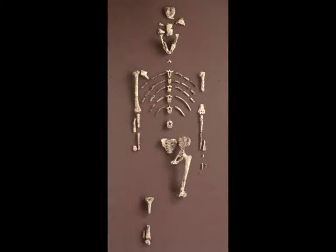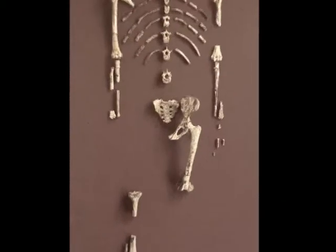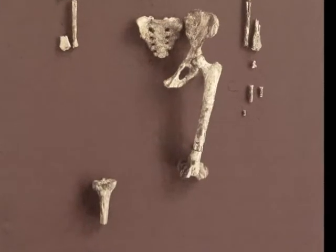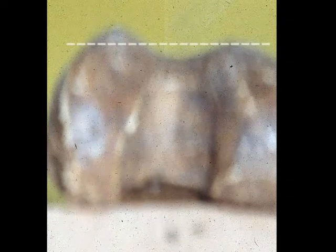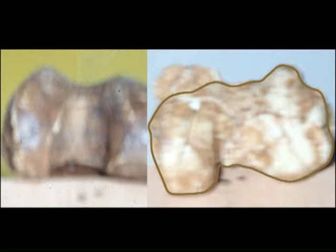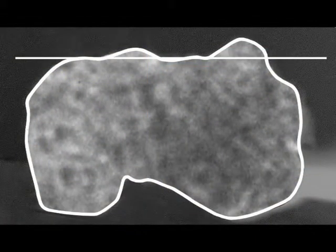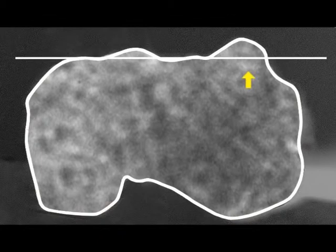Dans le cadre de cette étude morphologique, il a été réalisé une tomodensitométrie de l'extrémité du fémur gauche de Lucy et d'un fémur d'australopithèque robuste, dans des conditions identiques à celles utilisées chez les sportifs modernes. Les deux os ont été placés sur un support suivant un axe d'environ 15 degrés par rapport au plan horizontal. Les images obtenues montrent clairement que le condyle externe est nettement plus développé que l'interne et que, dans les deux cas, la trochlée est bien creusée. Il est aujourd'hui évident que Lucy et cet australopithèque marchaient debout de façon permanente.